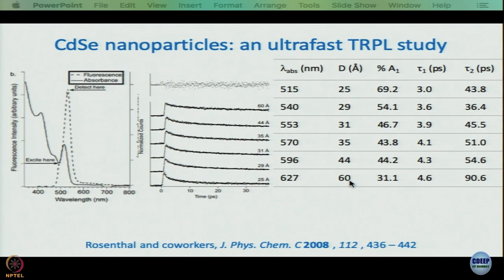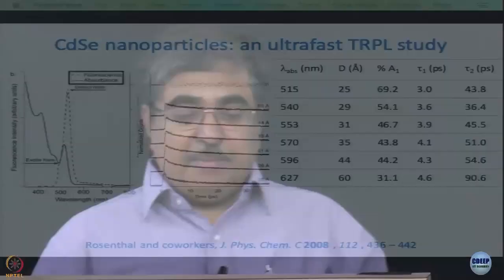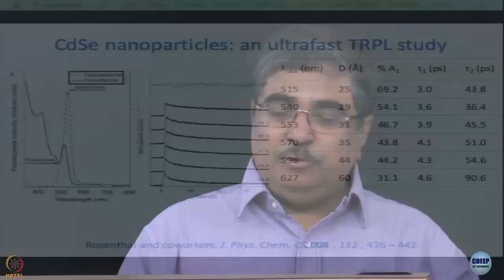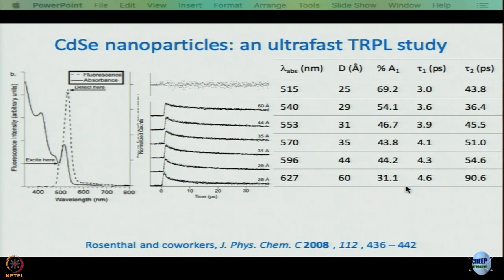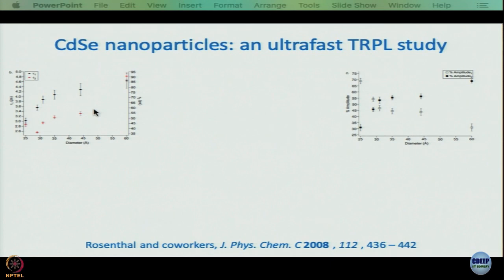As the diameter increases from 25 Å to 60 Å, both lifetimes increase. The shorter lifetime is 3–5 picoseconds and the relatively longer lifetime goes from 43.8 to 90.6 picoseconds. The percent amplitude of the ultrashort picosecond component decreased from 69.2% to 31.1%, so naturally the amplitude of the longer component increased accordingly.